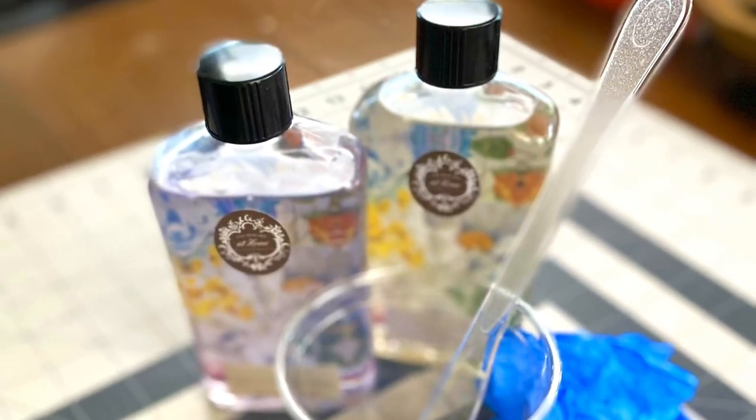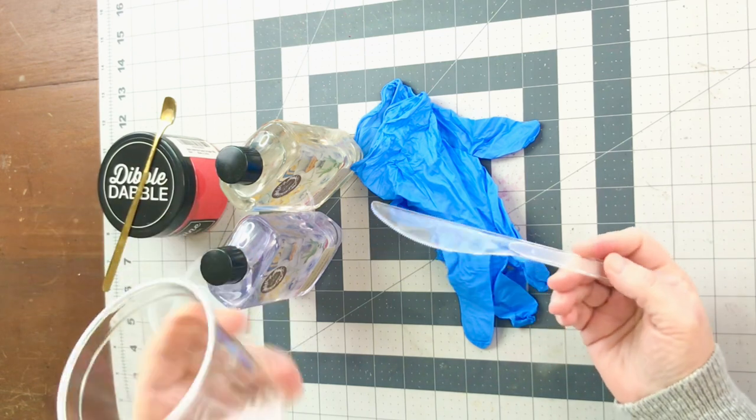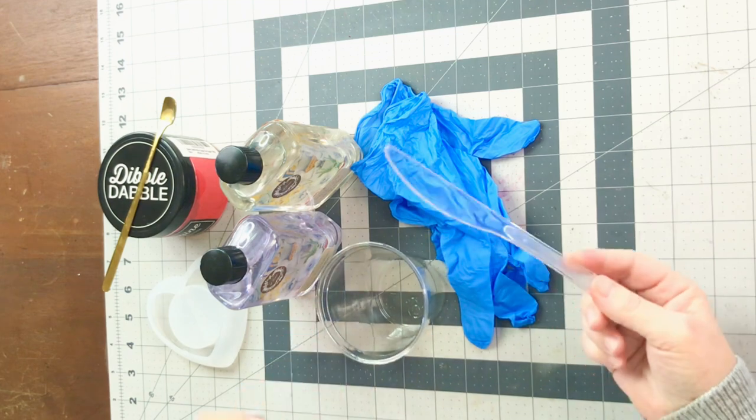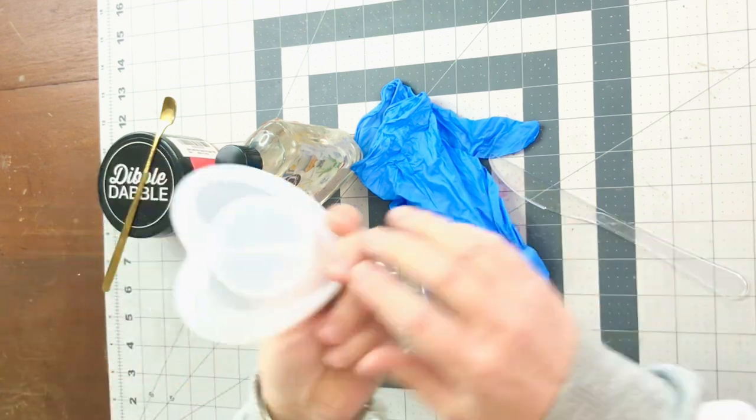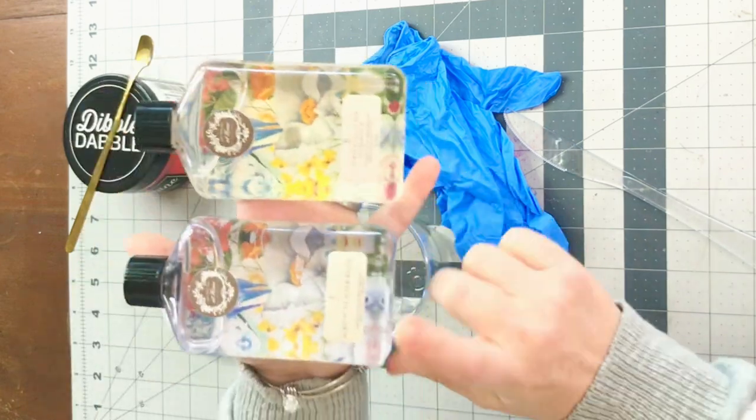Let's make a fun resin tea light candle holder. What you're going to need is a plastic disposable cup and a plastic knife or something to stir with like a popsicle stick. You're also going to want a silicone mold, this one is in the shape of a heart. I'll link it below.